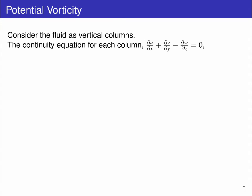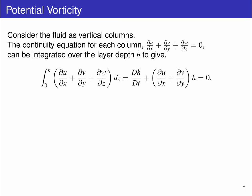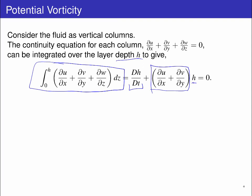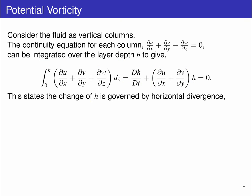We can take this concept one step further. Given that we are considering the fluid as vertical spinning columns, the continuity equation of each column can be written as per usual, and we can integrate this over the depth of the fluid H, to return the total time derivative of the fluid column depth H, plus the horizontal divergence times the depth H, is equal to zero. This is saying that to change H — to change the depth of the column — you need a finite horizontal divergence, which is fairly intuitive to understand.